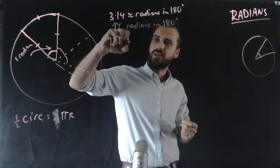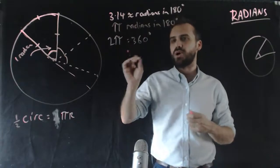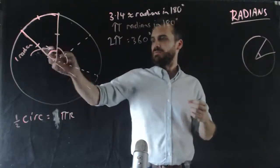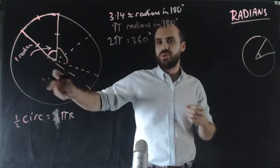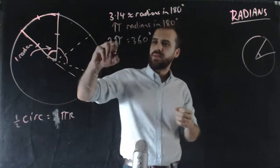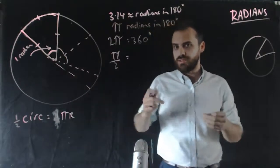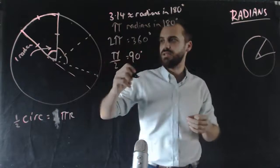2 pi equals 360 degrees. There are 2 pi radians. That means there's about 6.28 radians in 360 degrees. Pi on 2 radians is equal to 90 degrees.